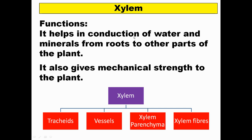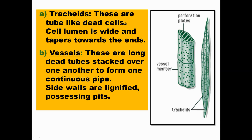Xylem conducts water from the root along with minerals to the various plant parts and provides mechanical strength. It is of four types: tracheids, vessels, xylem parenchyma, and xylem fibers. Only xylem parenchyma is the living one; the rest are dead. Tracheids are dead cells with a wide cell lumen that tapers to a pointed end. Vessels are long dead tubes stacked one over another forming a continuous pipe-like structure with lignified cell walls. Pits are the gaps visible in the vessel walls.